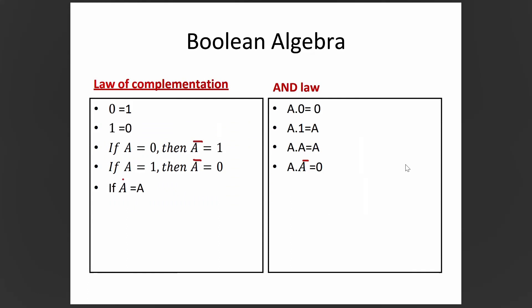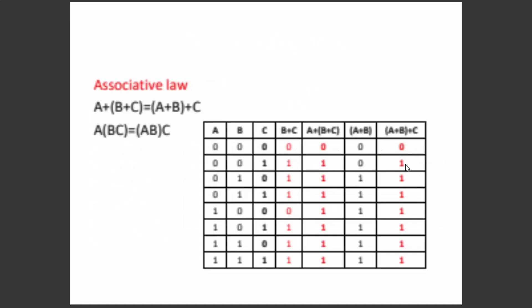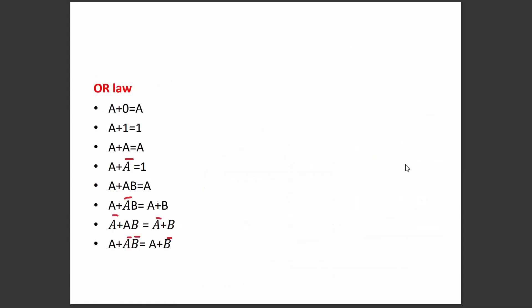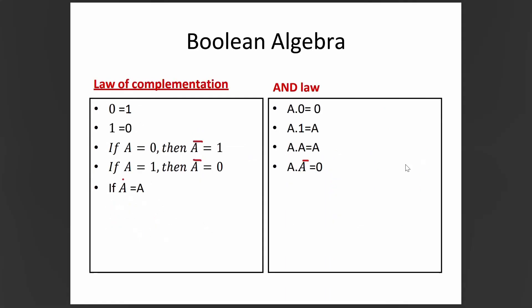In Boolean algebra, the law of complementation states: the complement of 0 is 1, and the complement of 1 is 0. If A=0 then A-bar=1; if A=1 then A-bar=0. A double-bar equals A itself. The AND laws are: A·0=0, A·1=A, A·A=A, and A·A-bar=0.